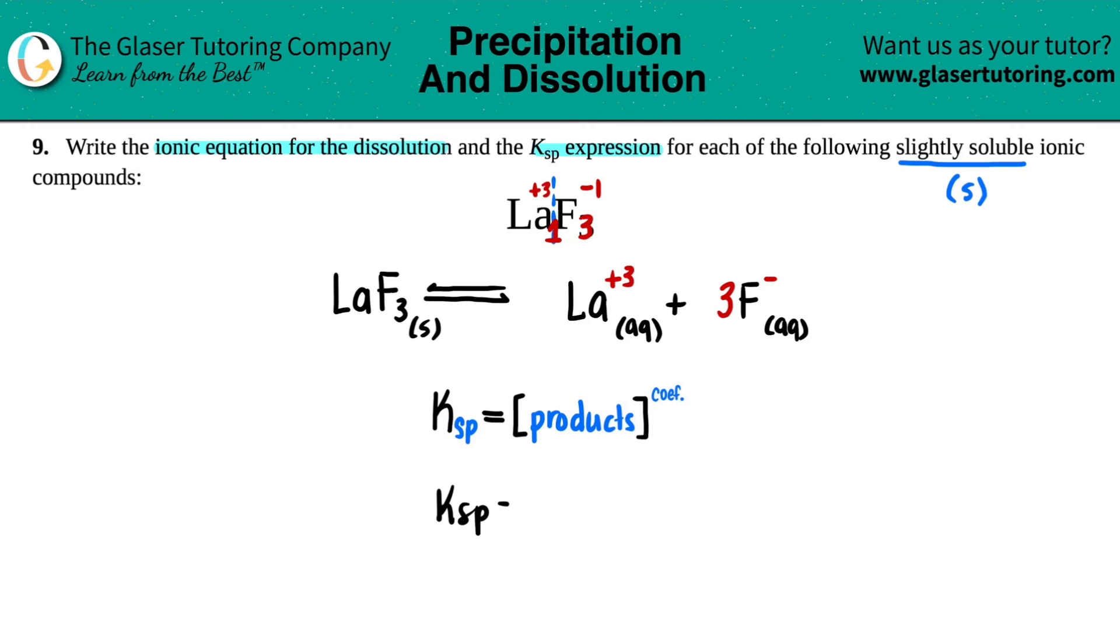So KSP would be equal to the concentration of La3+ and the fluorine. So I have La3+ times the fluorine. Remember, when you're doing a KSP expression, these two are being multiplied, not added as in the balanced equation.